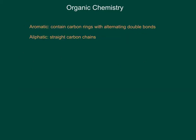The next thing we're going to look at briefly are aromatic and aliphatic compounds. Let's start with aliphatic. Aliphatic simply means a straight chain of carbons. For example, a pentane molecule — where all the dashes represent hydrogens bonded to carbon — would be an aliphatic compound.